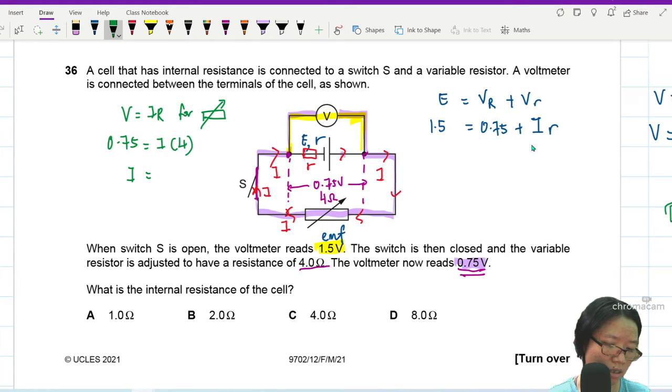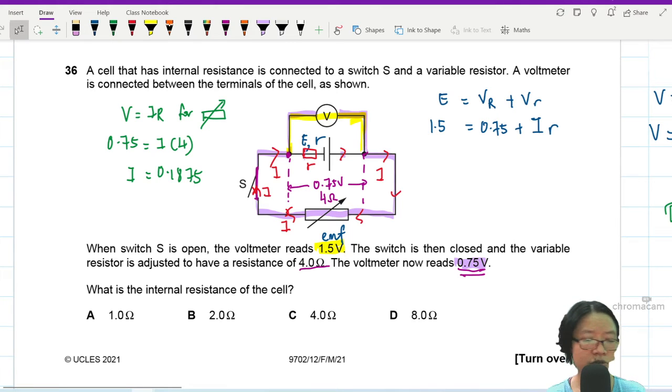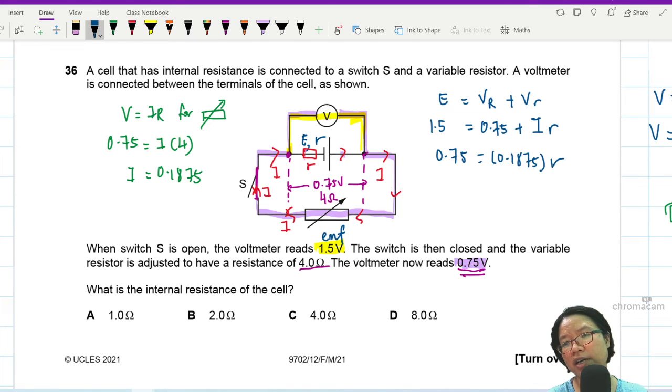This will be 0.1875. Okay, so 0.1875. I'm going to put that in here. Bring over and minus 0.75 will be 0.1875 times R. Then you can find your R. 0.75 divided by answer, this is 4.